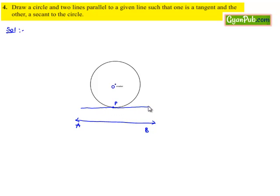Then let us draw a line parallel to AB as CD. As it is passing through one point of the circle, it will be a tangent to the circle.